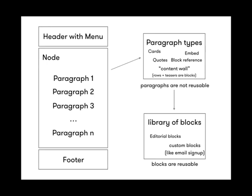These are the paragraph types we've been developing over the past year: cards, quotes, block reference, content wall where different cards can be positioned in different constellations, and embed functionality. And then we use a library of blocks — editorial blocks, custom blocks like email signup — that are reusable. The main difference between paragraphs and blocks is that paragraphs are tightly tied into your nodes, while blocks are reusable — you can build a library and have editors work with it independently of a page. We transitioned to a landing page builder where certain elements are reusable.